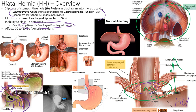Hiatal hernias affect up to 80% of American adults, partly because 66% are obese — obesity is a strong risk factor. When the stomach bulges upward into the thoracic cavity, patients can become short of breath. Shortness of breath is a key distinguishing factor between hiatal hernia and GERD — you get shortness of breath with hiatal hernia, not just with GERD.